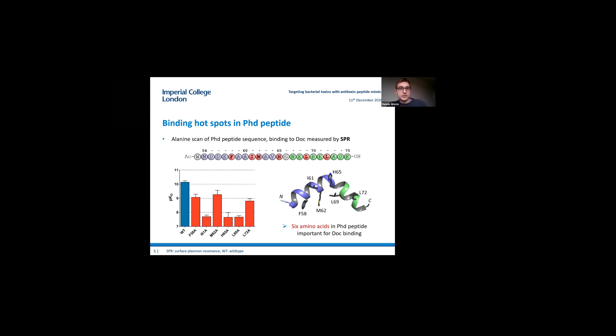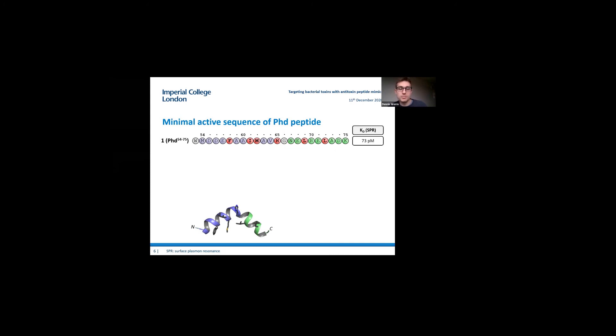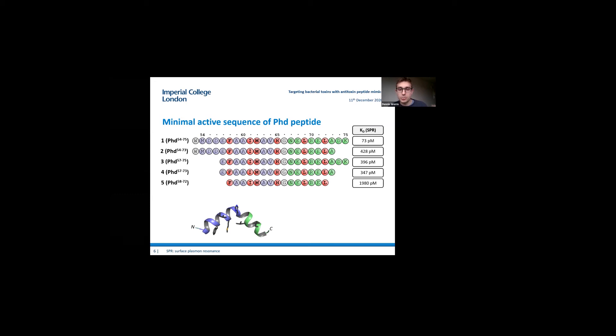To develop a more drug-like molecule, we were interested to figure out the minimal active sequence of our peptide inhibitor. Based on the full-length peptide sequence, we prepared truncated peptides and checked the binding affinity to Doc toxin by SPR. When we truncated the peptide on either the C-terminus or the N-terminus, we could still see nice binding affinity. When we truncated the peptide on both sides, we still saw binding in the picomolar range, although we lost some binding affinity. But interestingly, when we cut the peptide in half at the kink to just have the N-terminal or C-terminal helical half, we didn't see any binding anymore of both of these fragments.